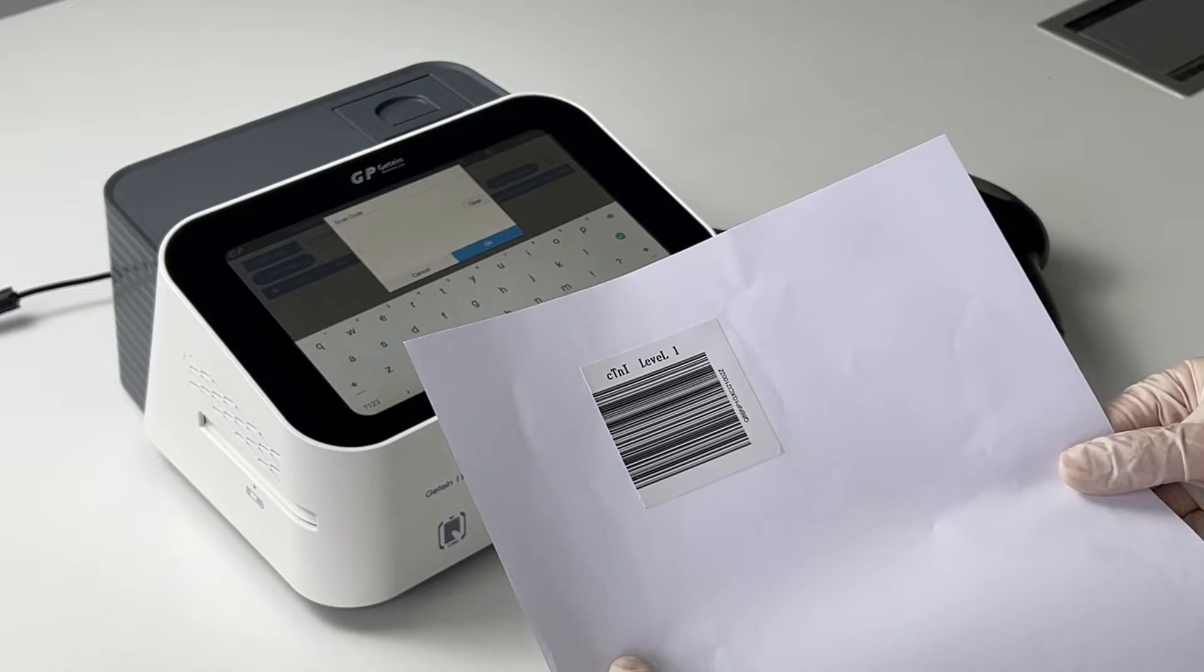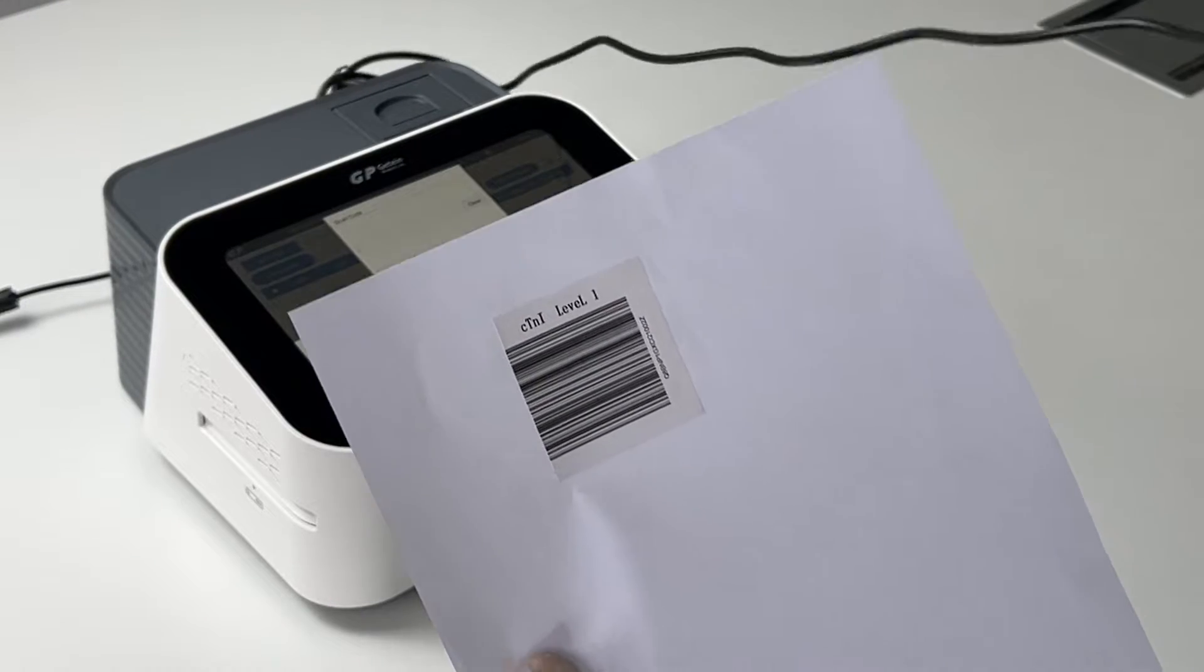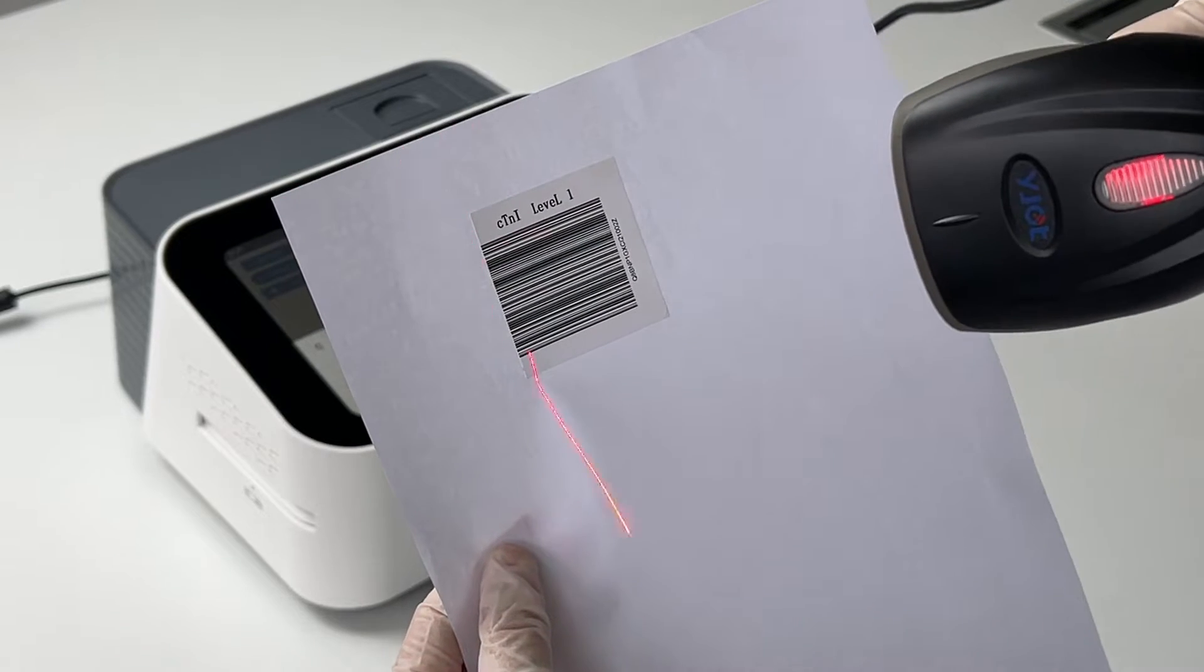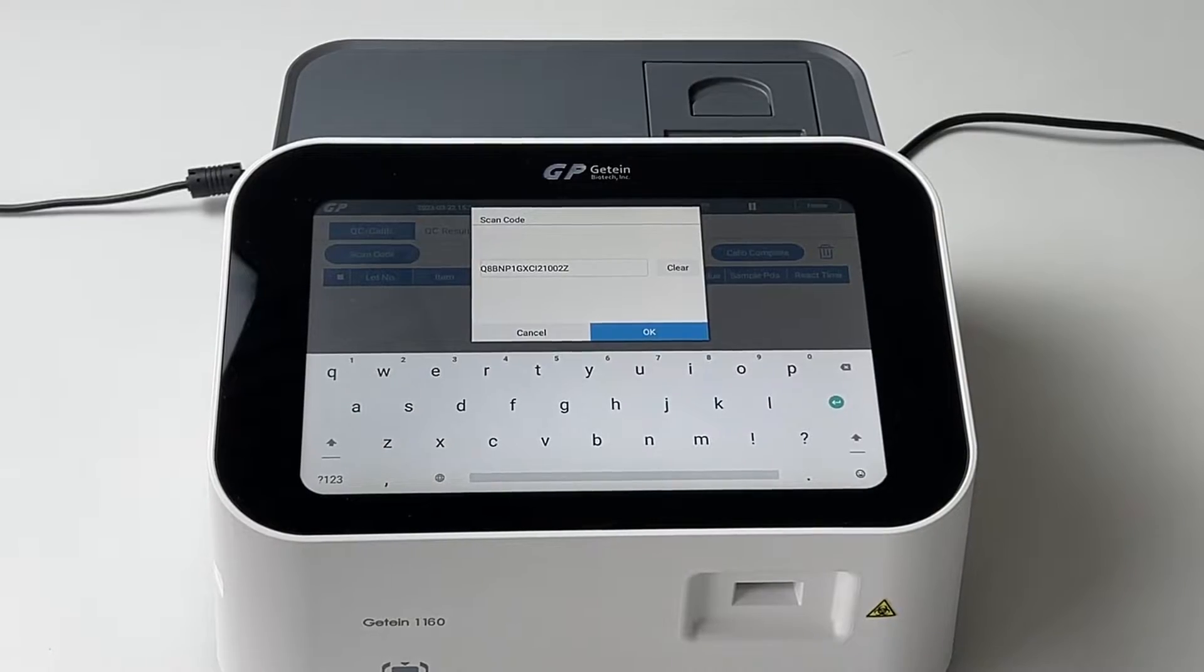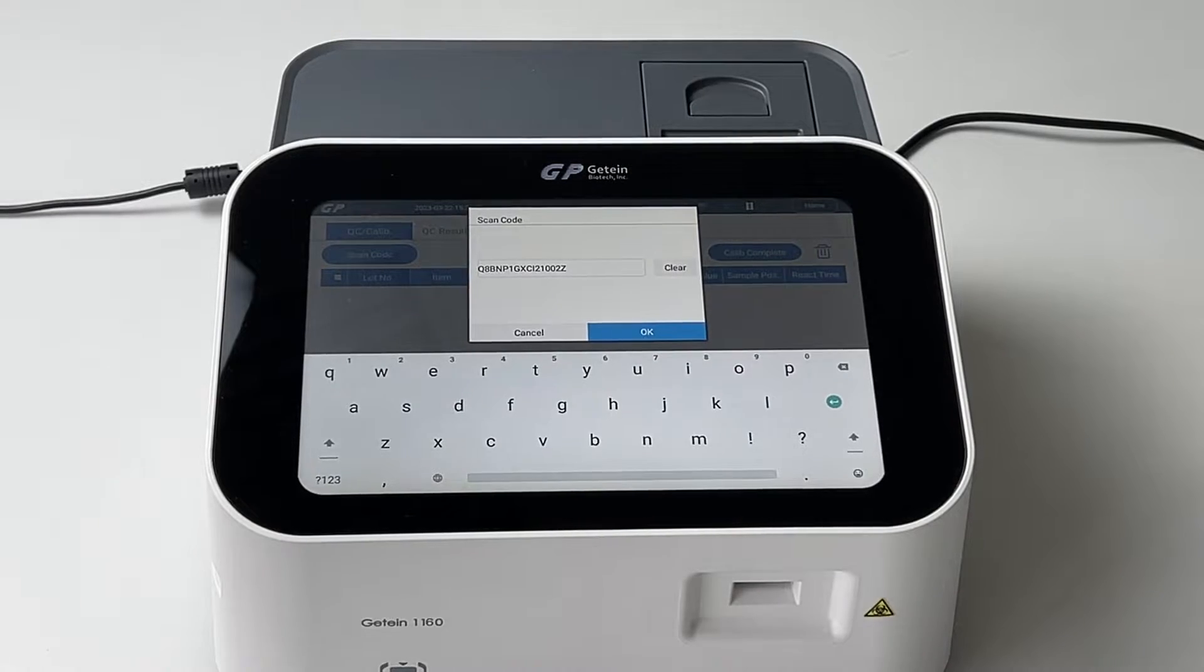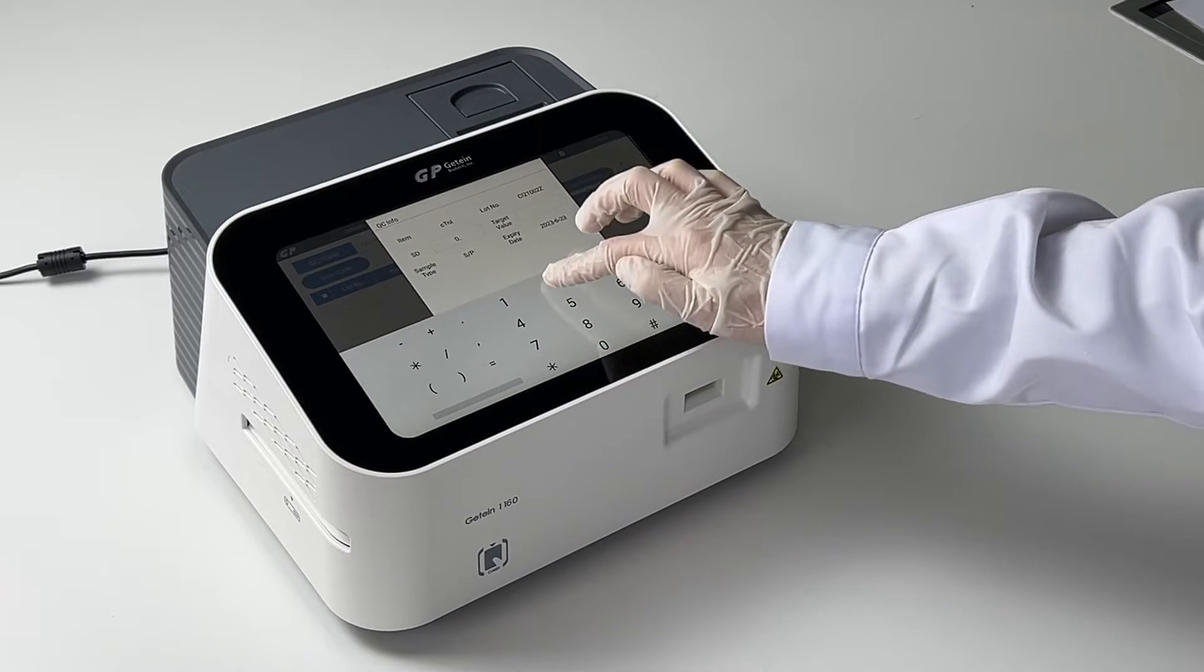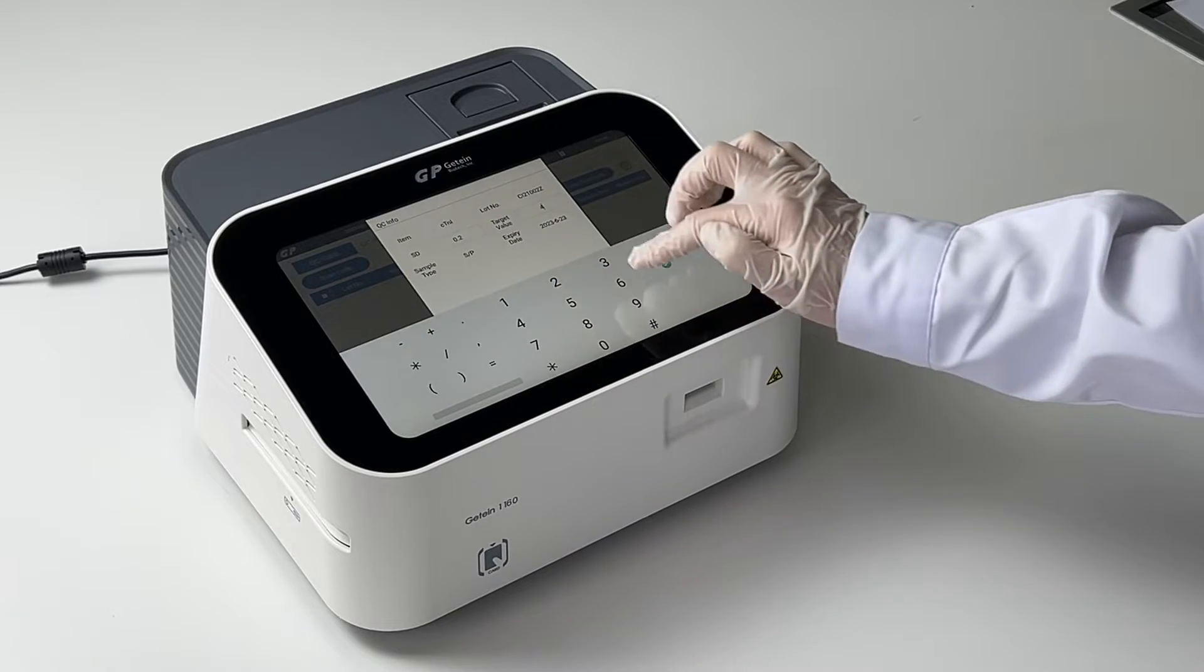Manually input the barcode number or use a barcode scanner to scan the barcode. After the Quality Control Information prompt appears, manually input the target and standard deviation values according to the target value sheet.